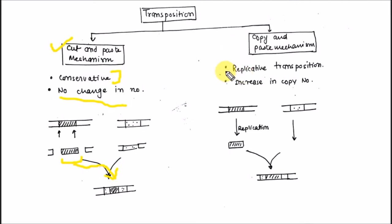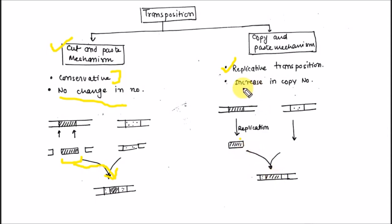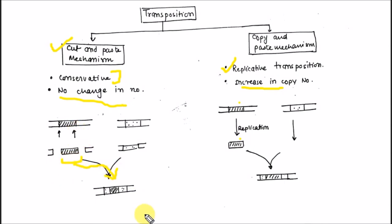In the copy-and-paste mechanism, also called replicative transposition, one copy of the transposable element is replicated and the replicated copy binds to the target site. This increases the copy number — the original copy remains at the original site, and the replica binds to the target site.